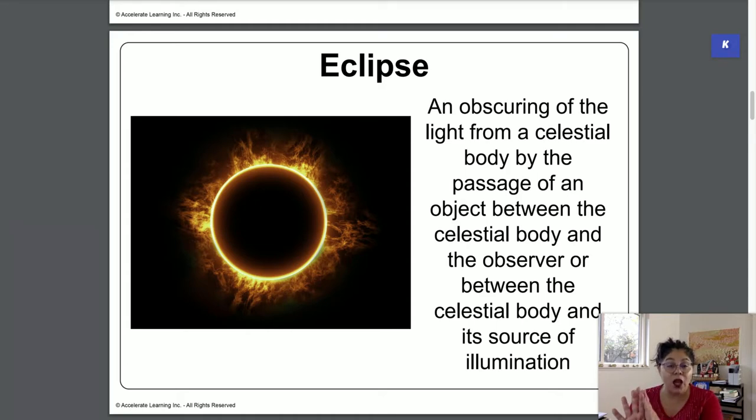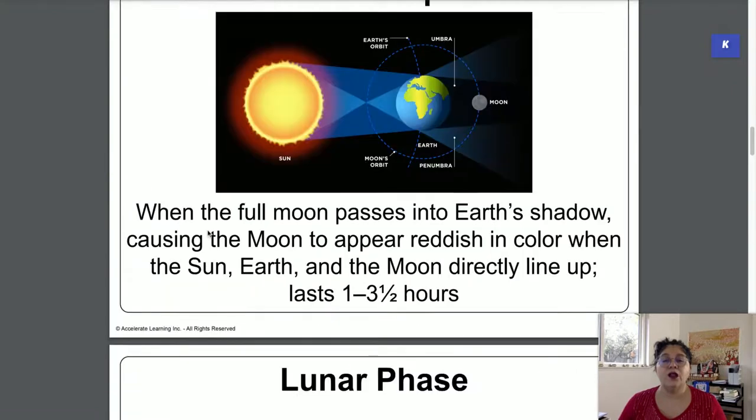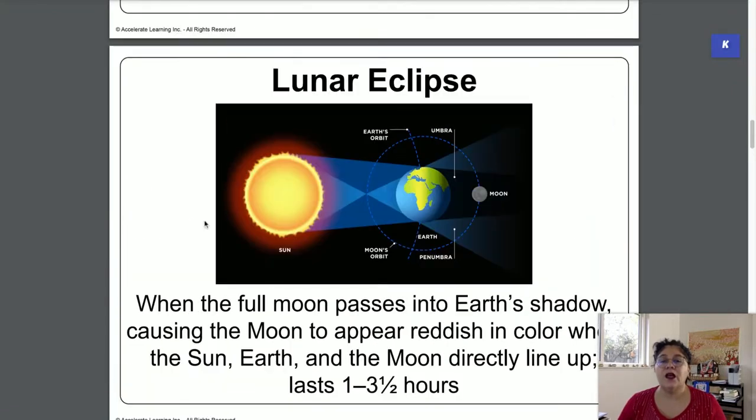Next word: a lunar eclipse. A lunar eclipse is when the full moon passes into the shadow of the Earth, which means the moon disappears or it can look super red. Now what happens is that here is the Sun, and here is the Earth, and the moon goes into the area next to the Earth where the moon disappears.